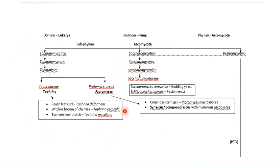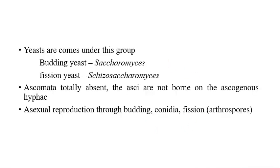Now we will see about Saccharomycotina. The most important thing we want to discuss in Saccharomycotina is about yeasts — all yeasts come under this group. We will see two types of yeast: budding yeast, Saccharomyces cerevisiae, and fission yeast. Yeast can be reproduced by means of budding.